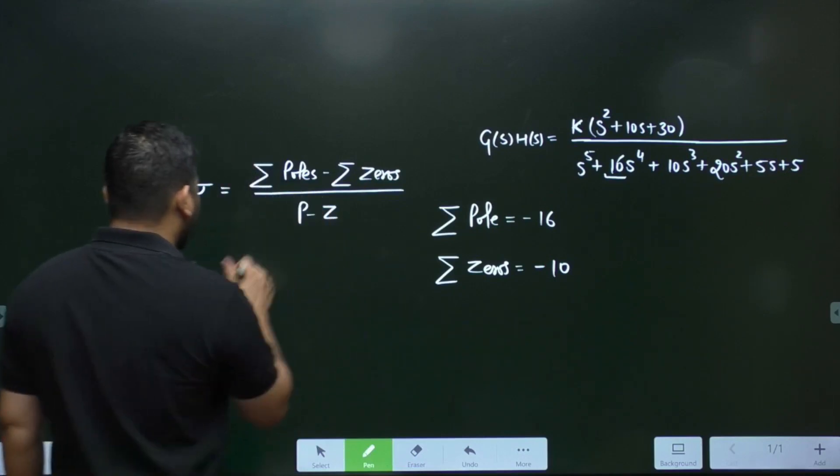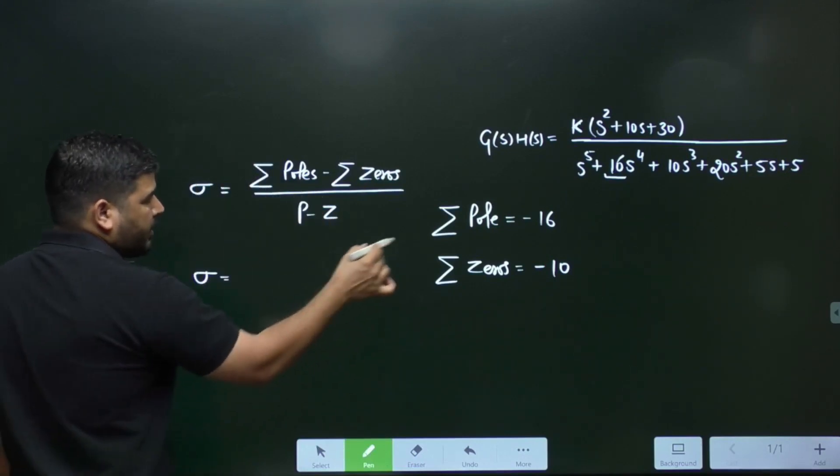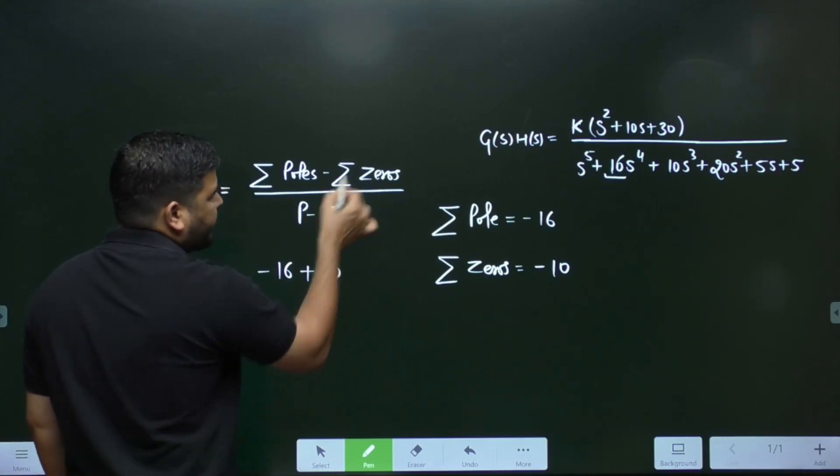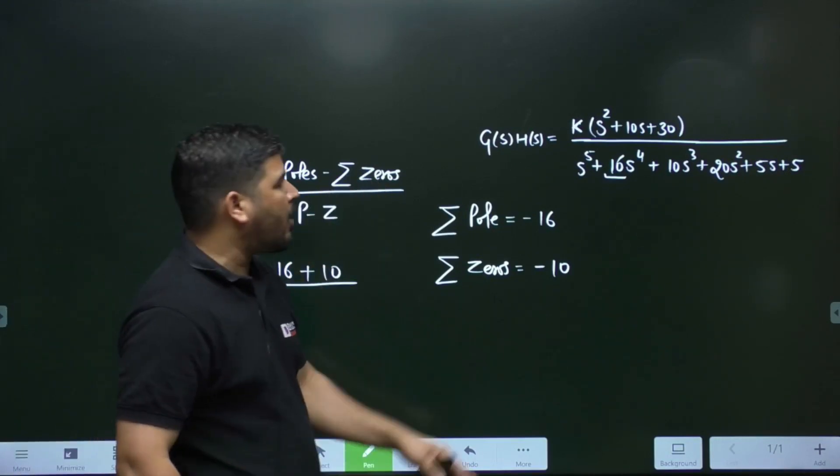So I can calculate the centroid point like this: minus 16 plus 10, if you put these values, divided by number of poles minus number of zeros.